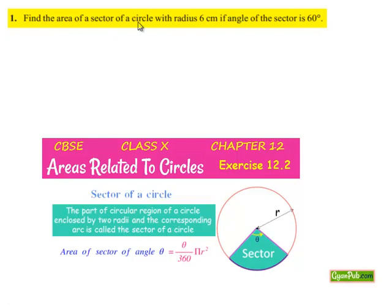Moving on to first question, find the area of sector of a circle with radius 6 cm if angle of sector is 60 degrees.